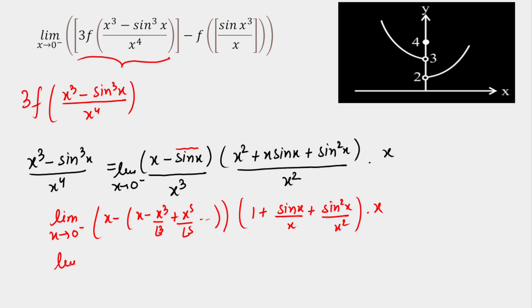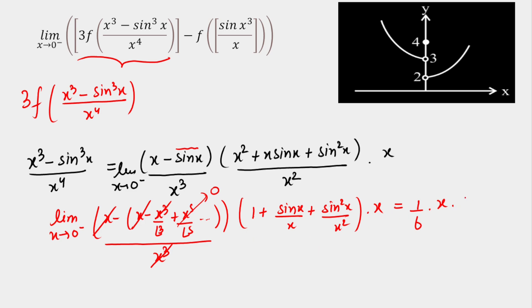Now calculating the limit — the x and -x cancel out. The x³ terms: -x³/3! contributes 1/6. The higher-order terms like x⁵ tend toward 0 after cancellation with x³, and the rest of the terms are 0. So the result from this part is 1/3! = 1/6. Multiplying by x and the factor of 3 from outside, we get the input tending toward 0 negative as x approaches 0 negative.